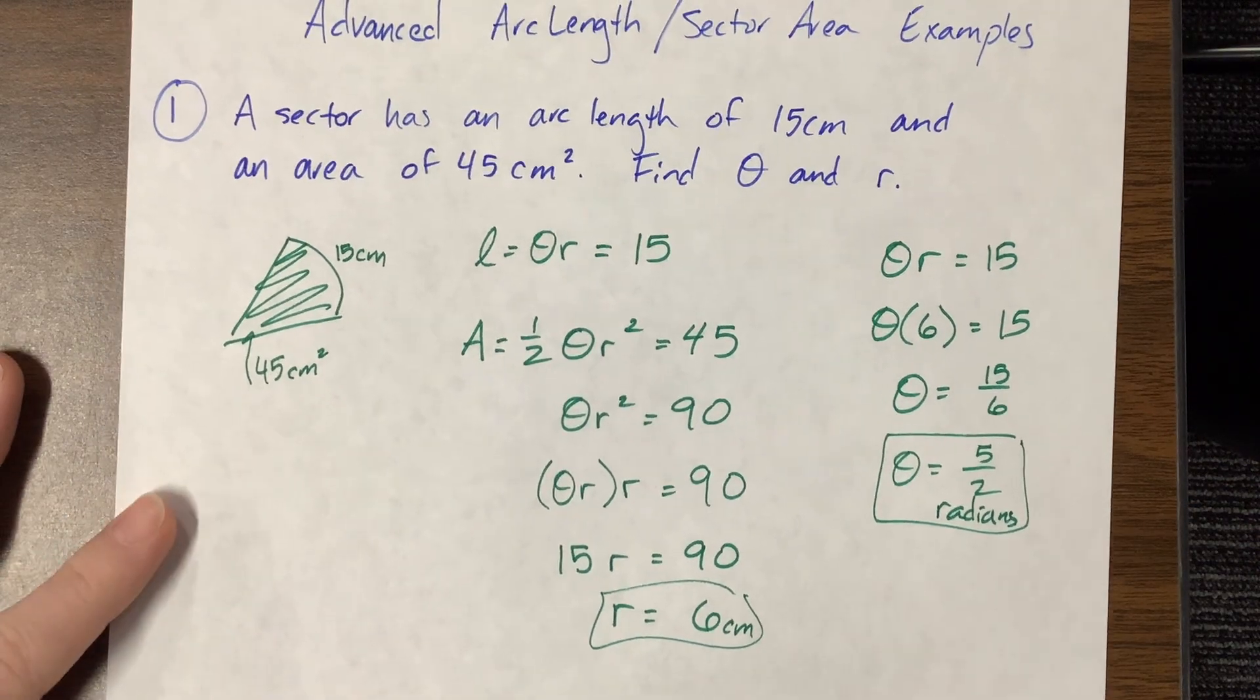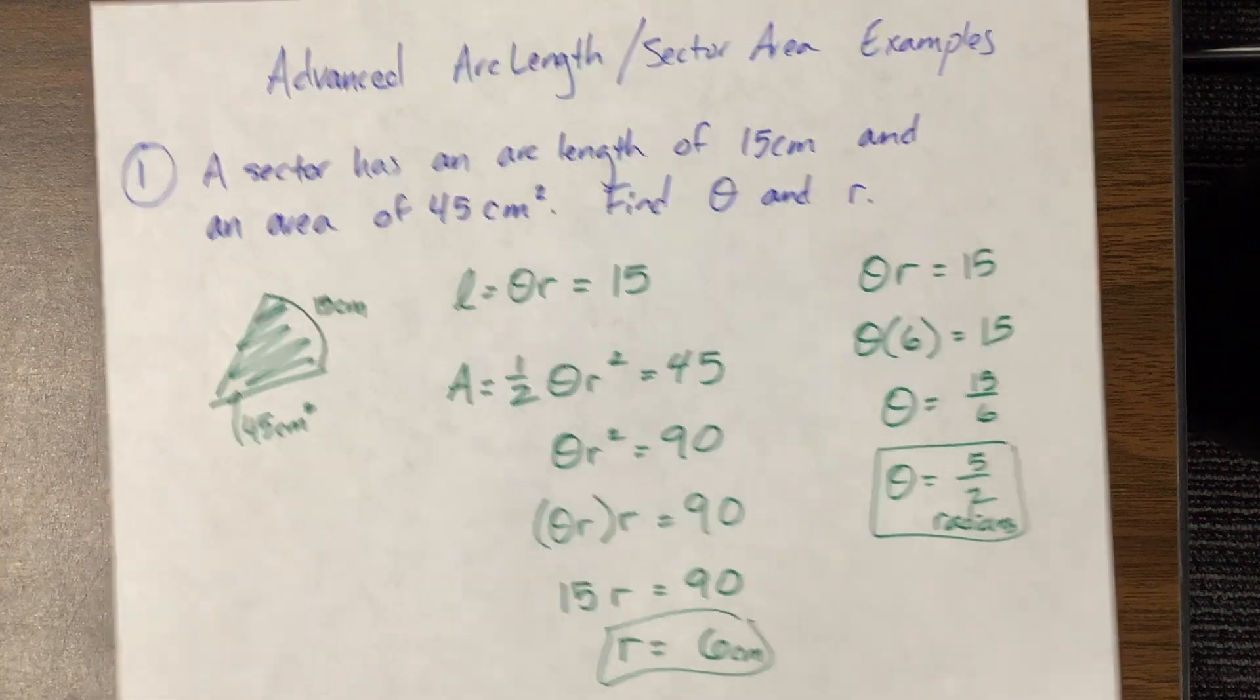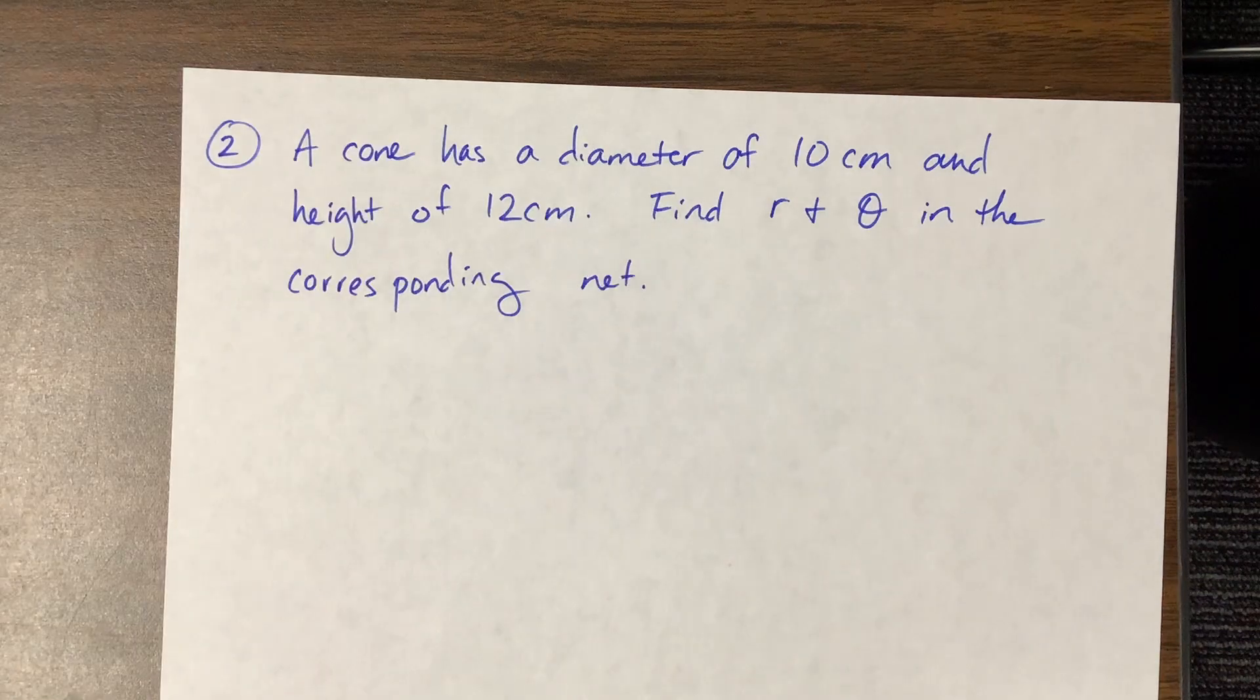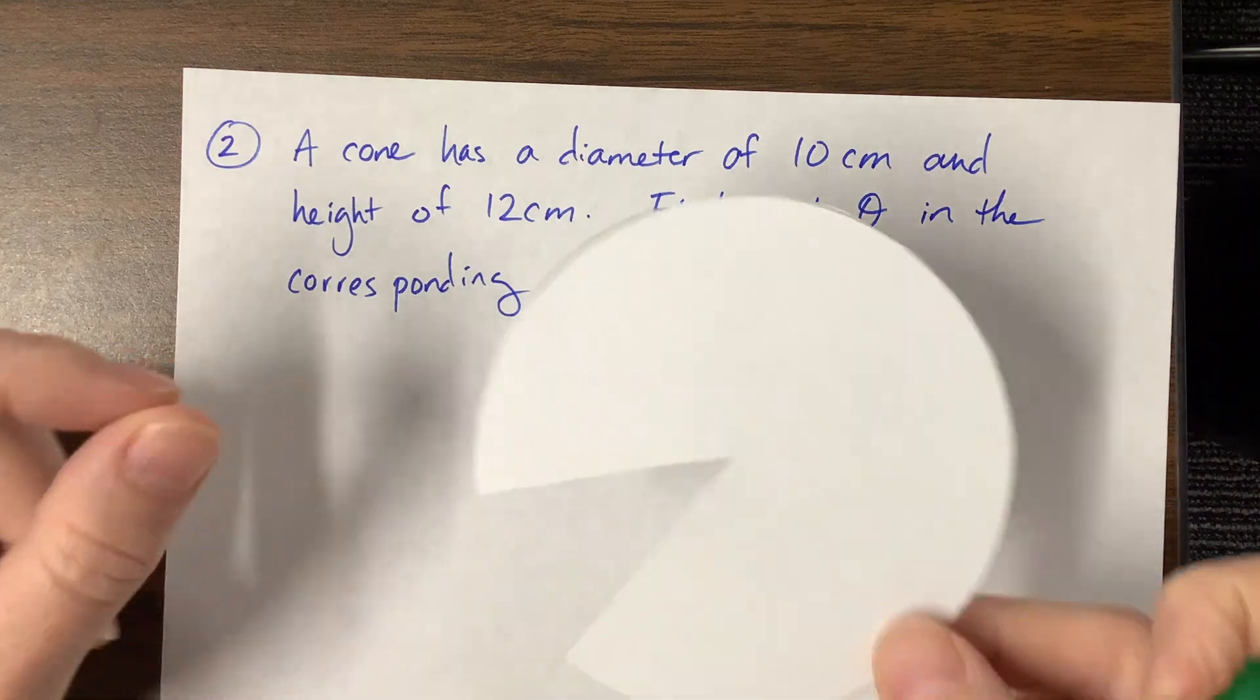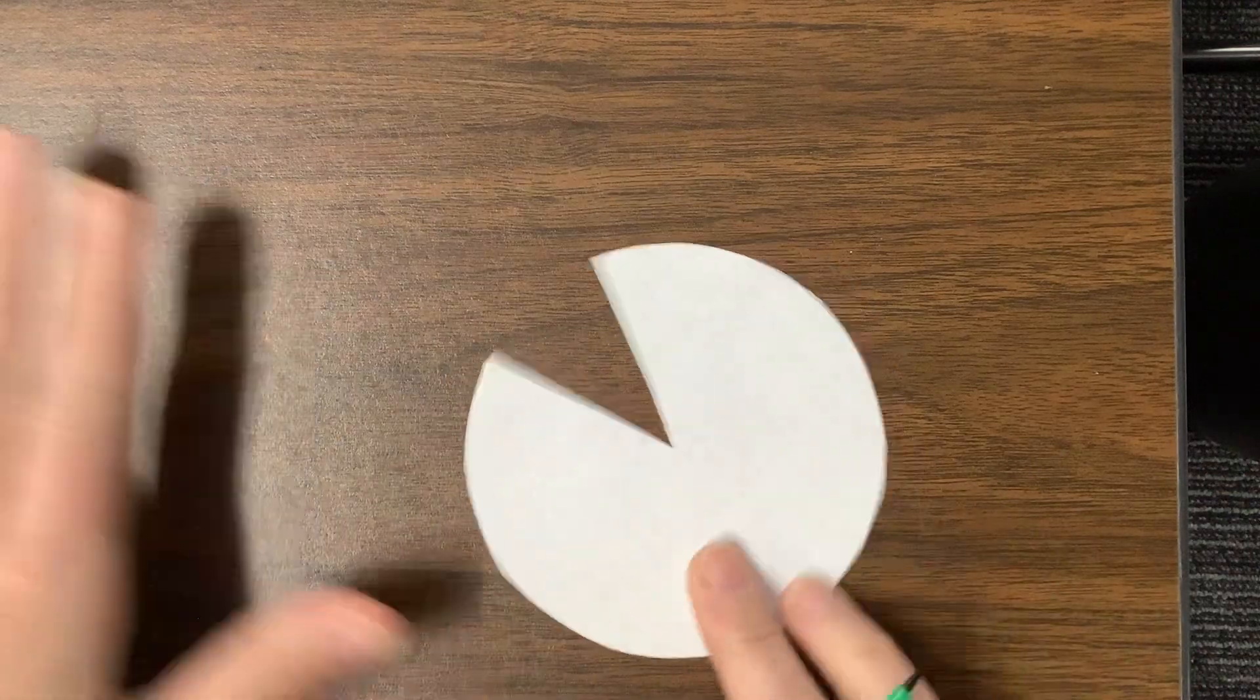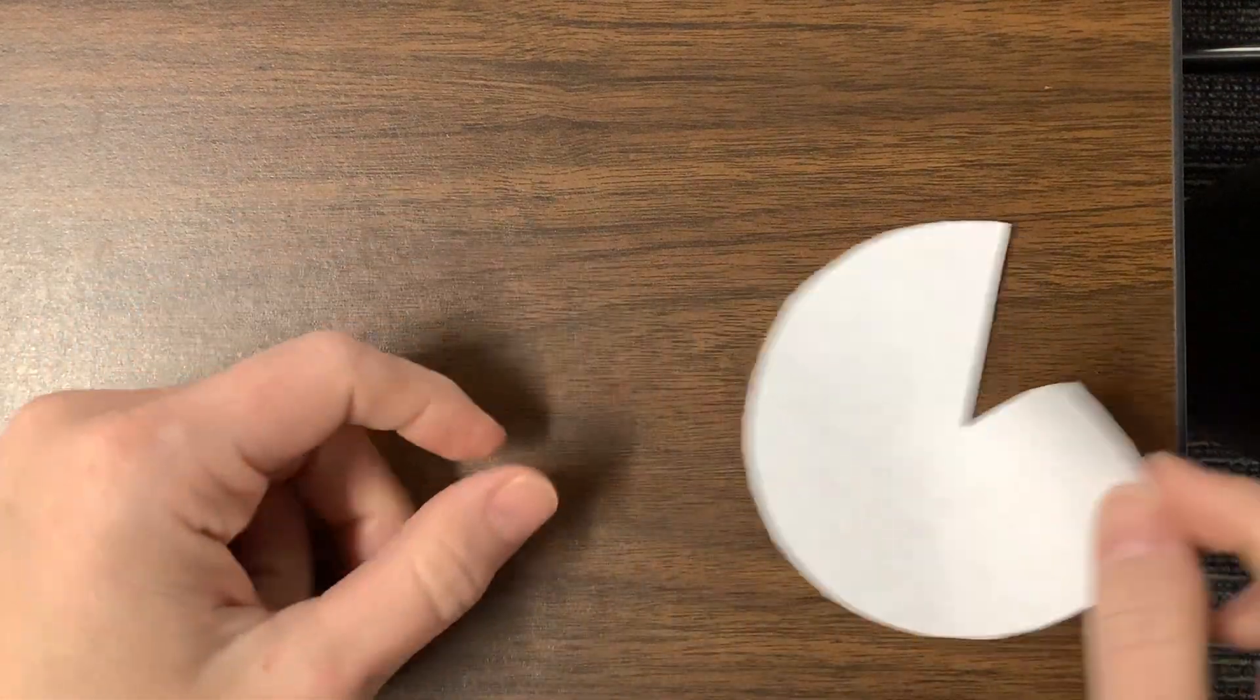Once again there's other ways that you could perhaps do this but I think that's the easiest. The next problem tells us a cone has a diameter of 10 centimeters and a height of 12 centimeters and they want us to find r and theta in the corresponding net. So basically what we have here, this is a, this flat sector is the net of our cone.